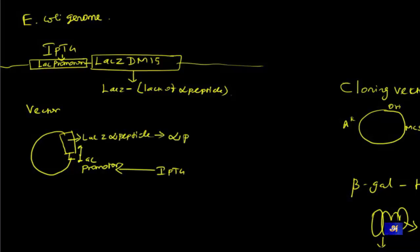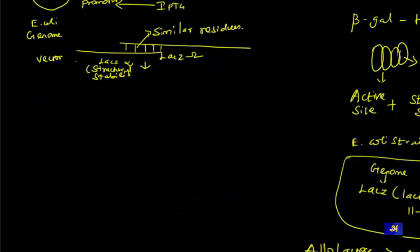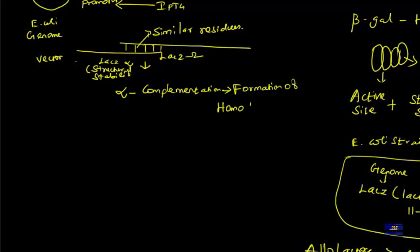The same IPTG will of course interact on the vector DNA also, the circular DNA of bacteria. When it interacts, it will produce alpha peptide expression. Now both proteins - lac Z minus consisting of only omega peptide, and alpha peptide - when they interact, they form alpha complementation. As we discussed in the beginning, alpha complementation will lead to the formation of a homotetramer.